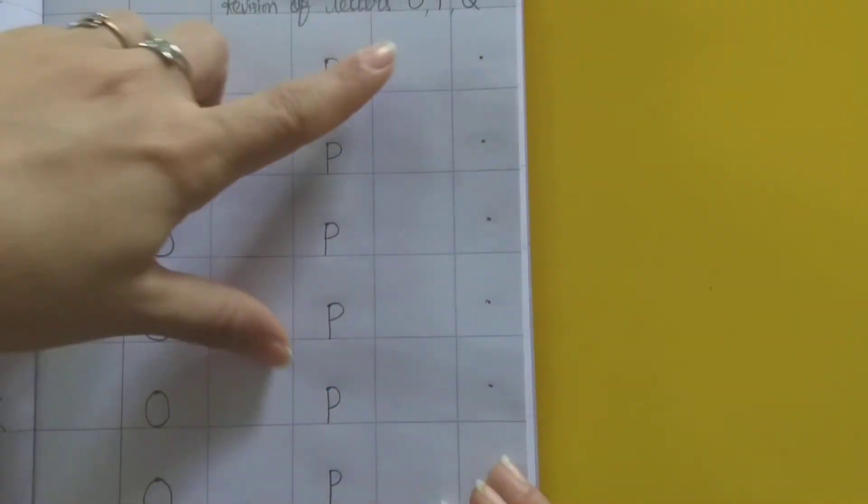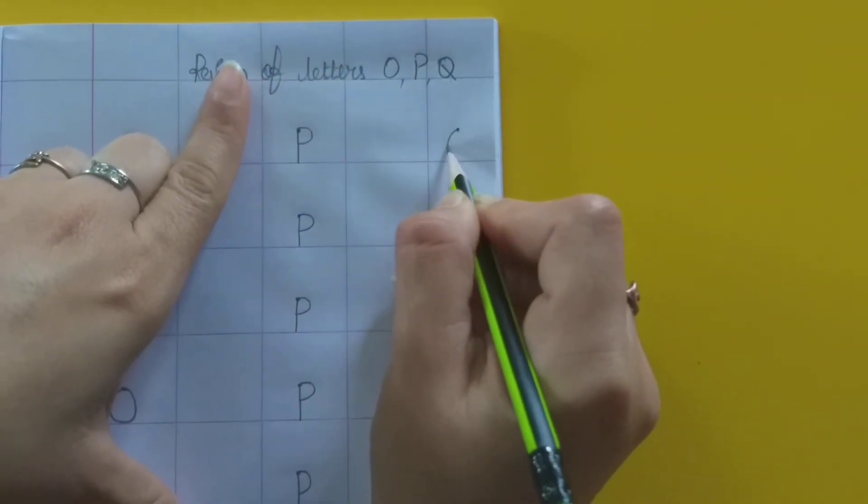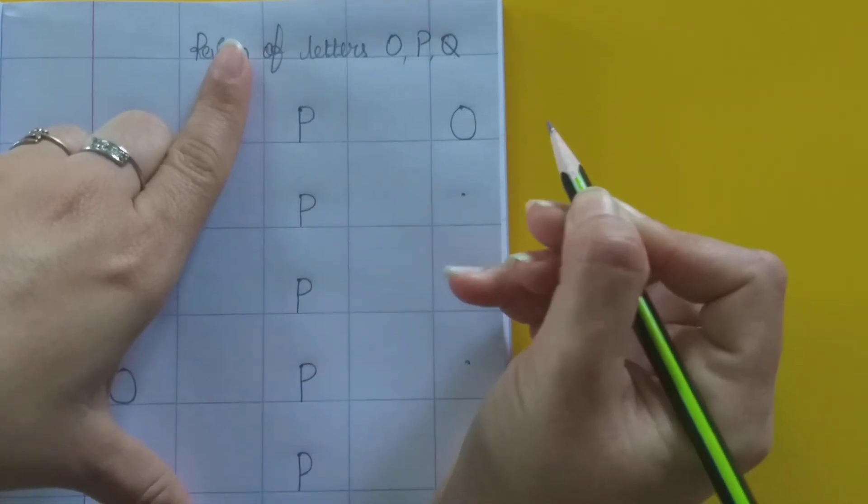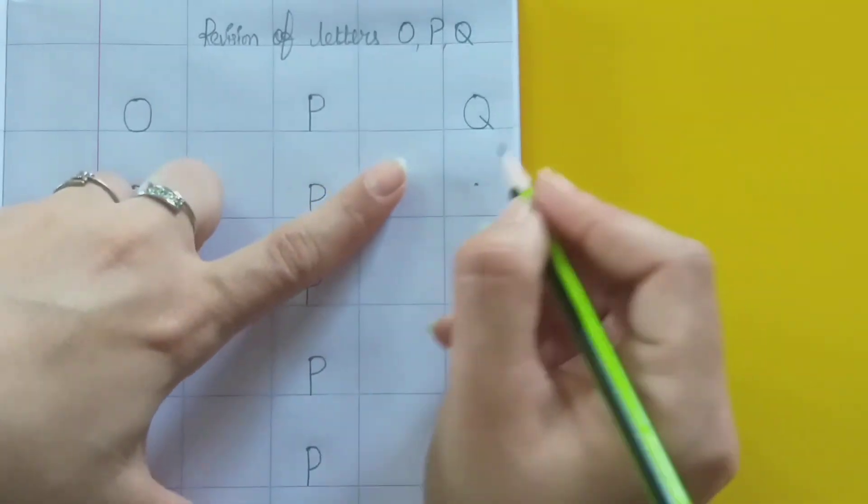Dekha? Abhi ham doosra letter trace karenge. Konsa hai? Q. Pehle ham ek O banayenge. Phir isme ek aise line. Toh konsa letter huwa? Q.